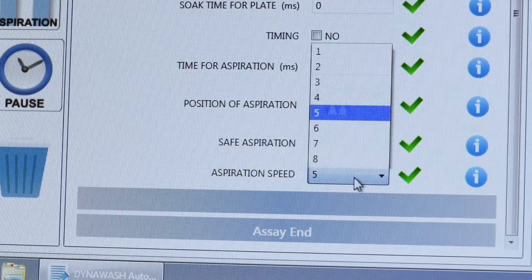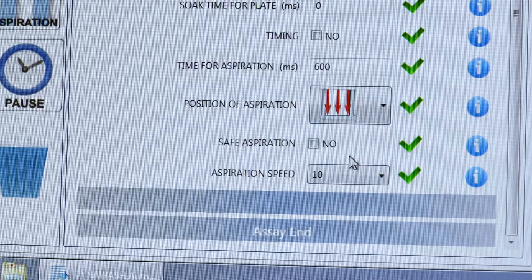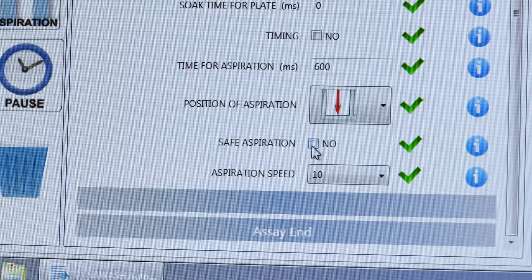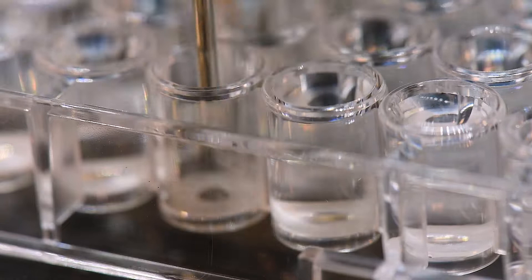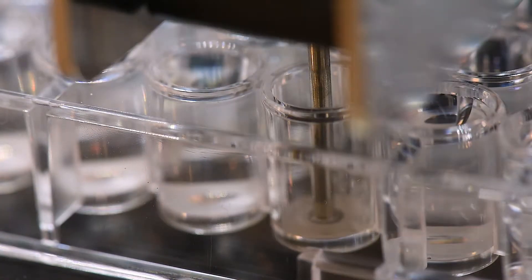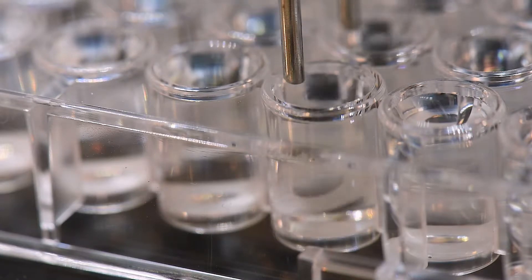It has many options for setting washing parameters, such as adjusting the aspirating speed, multipoint aspiration to reduce residual volume. Also, safe aspiration function is possible, for example, when washing wells with discs so that they don't wash away.